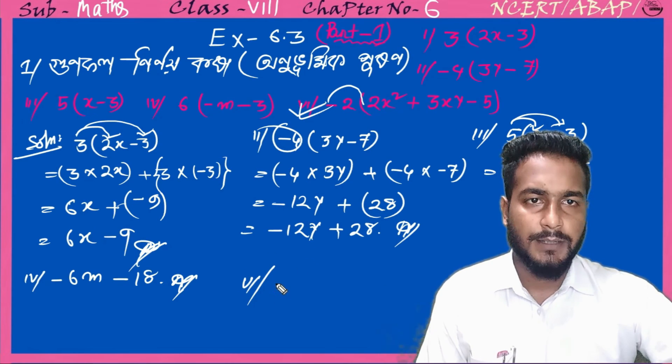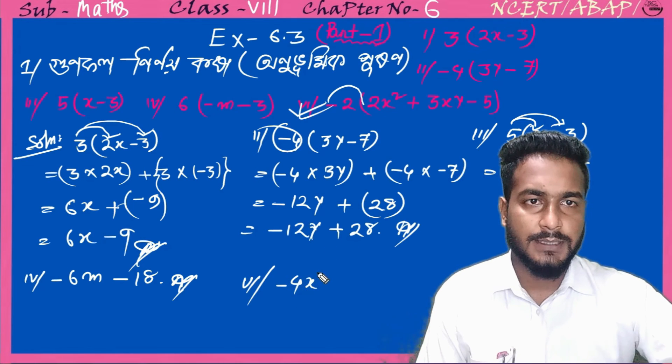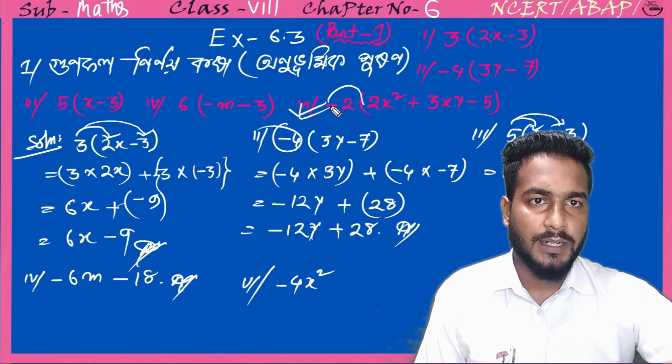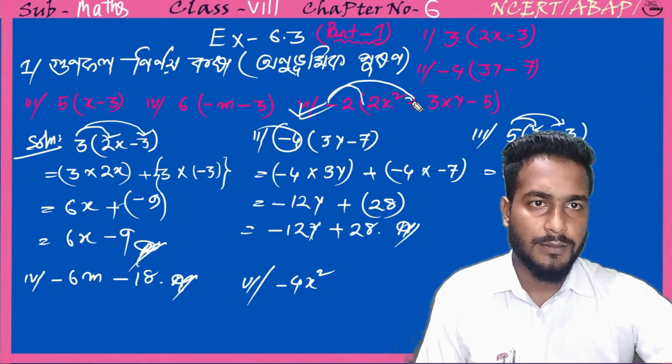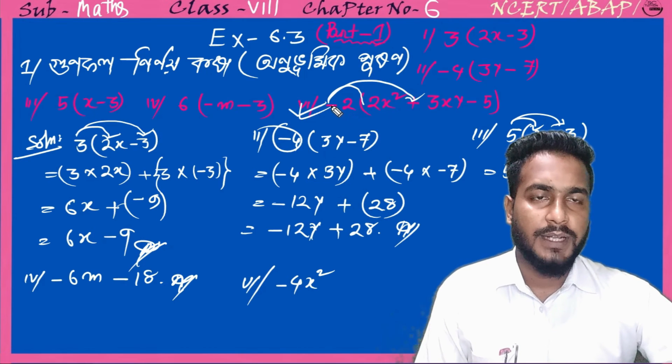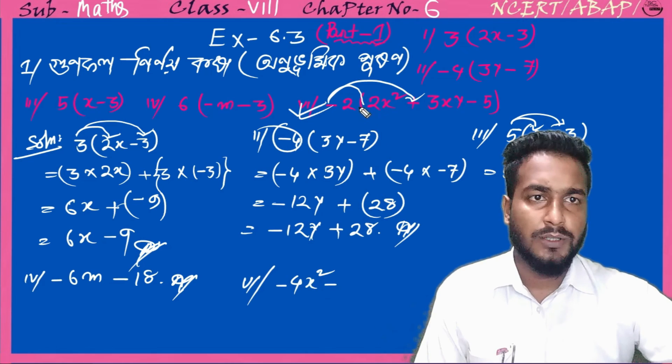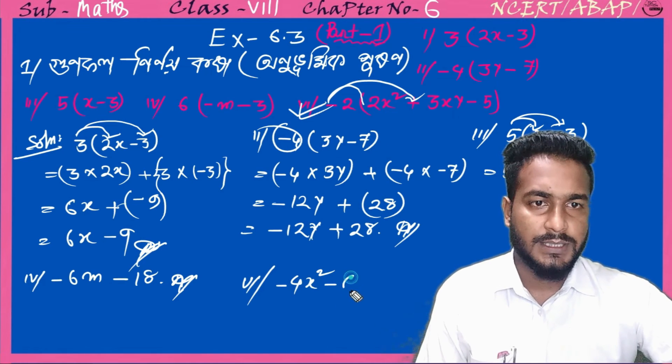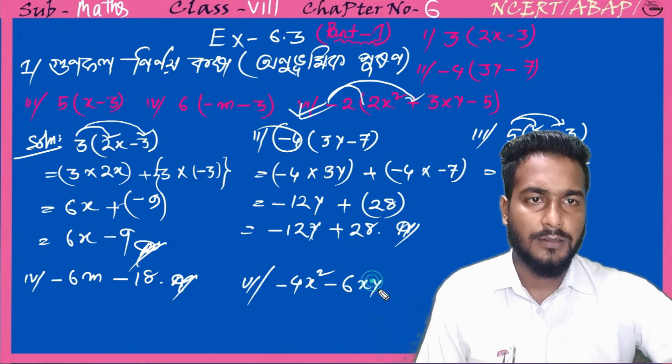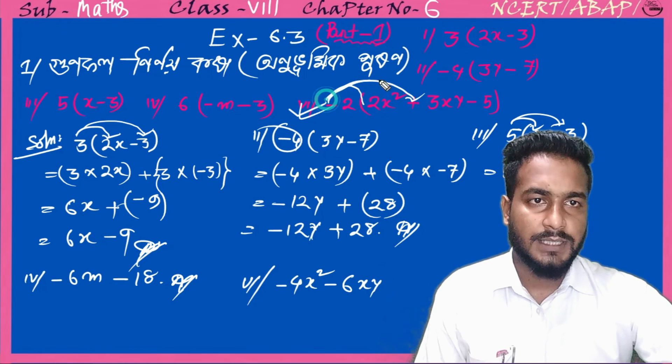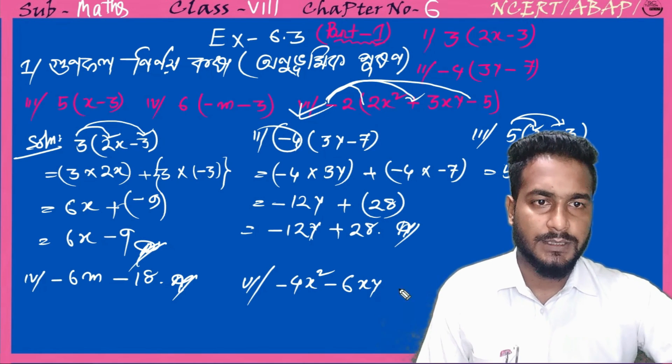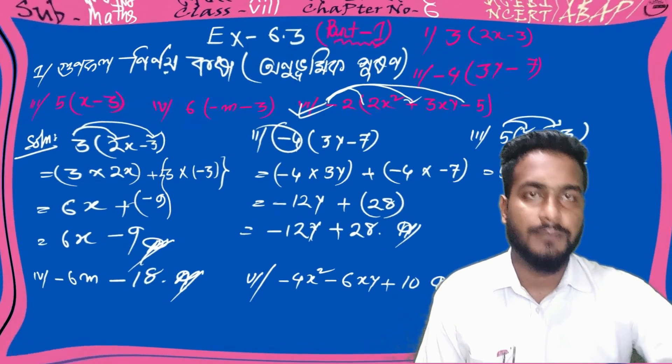Here we have 2x minus 3 times 2x plus 5. First, 2x into 2x equals 4x squared. Now this 2x multiplied with plus 5: plus into plus equals plus, 2 into 5 equals 10xy. Now minus 3 multiplied with 2x: minus into plus equals minus, 3 into 2 equals 6xy. Then this minus 3 with plus 5: minus into plus gives minus 15. And this is the answer of this sum.